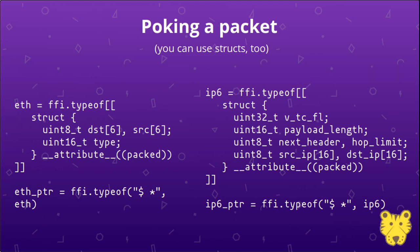The foreign function interface of RaptorJIT also lets you declare C structs inline, and we might define our protocol headers this way. Here we have example definitions of the Ethernet header and an IPv6 header. A key part is the '__attribute__((packed))' C declaration, which tells it to have no padding and not try to align fields — interpreting them as-is. These are verbatim C struct memory layouts.